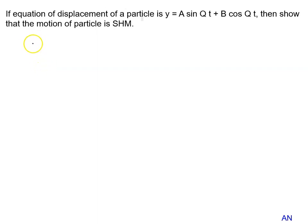If equation of displacement of the particle is given by y equal to A sin Q t plus B cos Q t, then show that the motion of the particle is SHM.